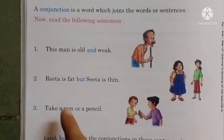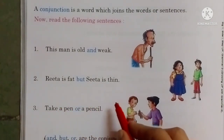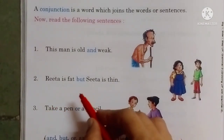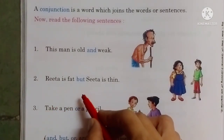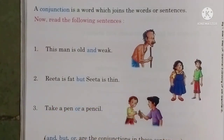Rita is fat but Sita is thin. In this sentence, 'but' is a Conjunction.